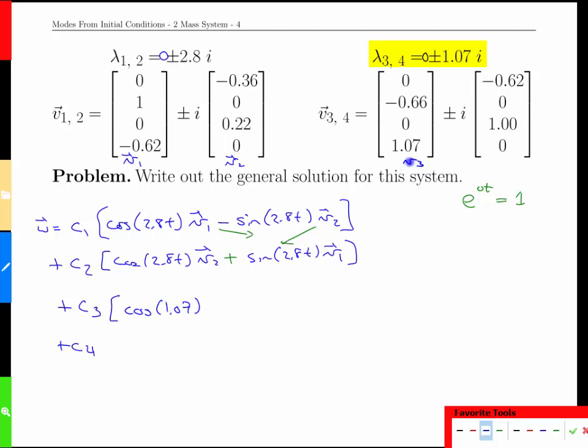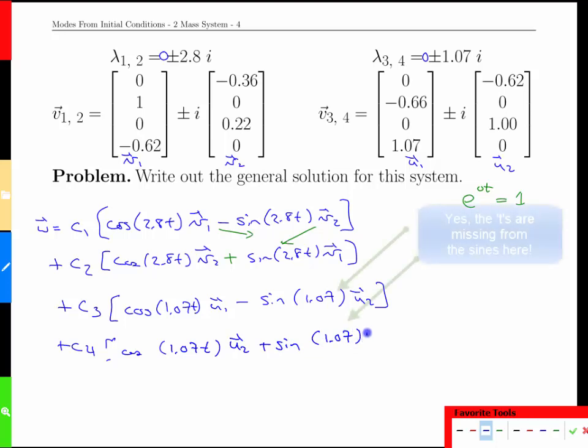We'll have cos of 1.07. Let's call that u1 and u2, just so they look a bit different. Minus sine of the 1.07 u2 and cos again, there should be a t there, 1.07t u2 plus sine of 1.07 u1. So that is our general solution.